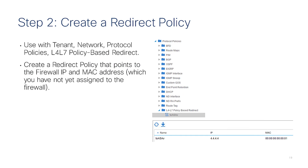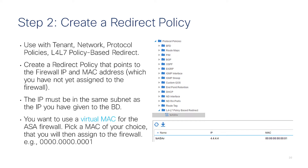Step two: you create a redirect policy. You just need to configure the IP and the MAC address of the firewall. The MAC address should be a virtual or floating MAC address so that if the firewall fails over, ACI can still reach it because the MAC is the same for the newly active firewall.